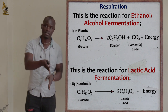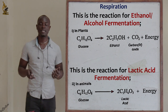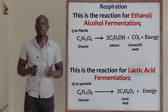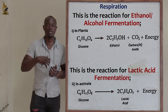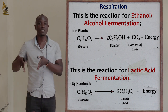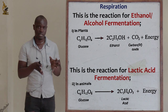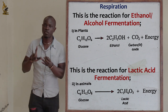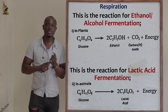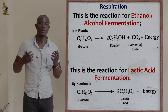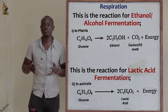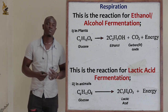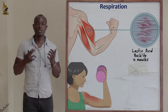Alcoholic fermentation is for plants, while lactic acid fermentation is for animals. Alcoholic fermentation mainly involves respiration by yeast in plants, producing ethanol. For anaerobic respiration, glucose is incompletely broken down to form ethanol, carbon dioxide, and energy. Lactic acid fermentation mainly involves the incomplete breakdown of glucose in the body to form lactic acid, carbon dioxide, and energy.